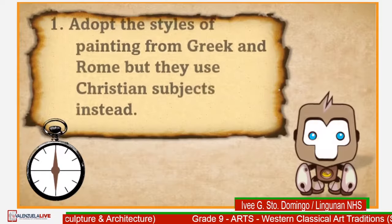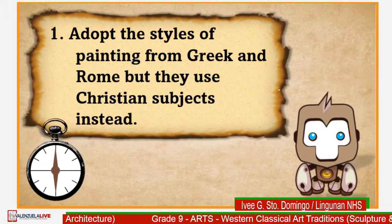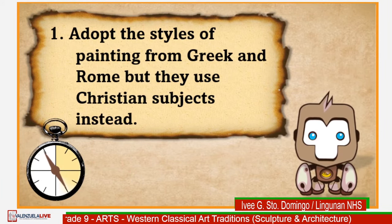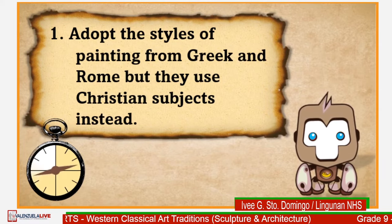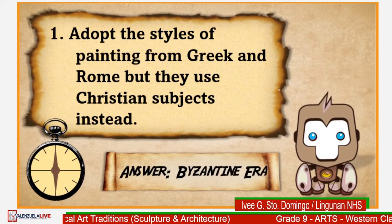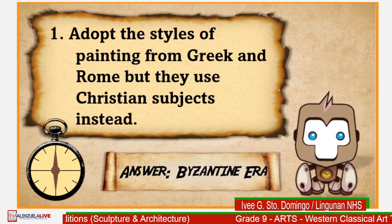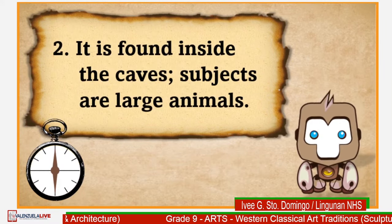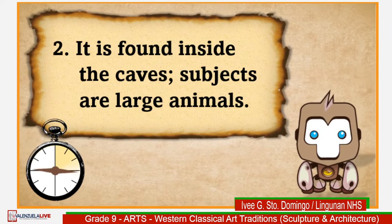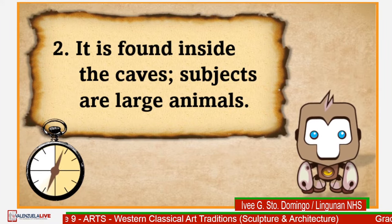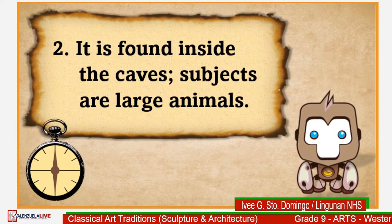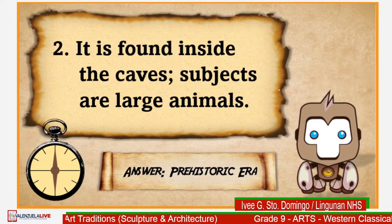Number 1: Adopt the styles of painting from Greek and Rome but they use Christian subjects instead. The correct answer for number 1 is Byzantine. Number 2: It is found inside the caves, subjects are large animals. The correct answer is from the prehistoric era.